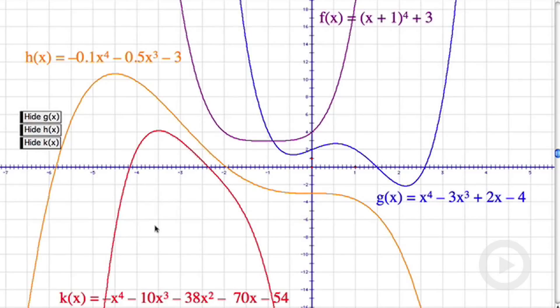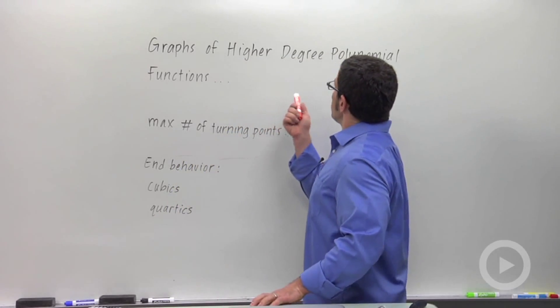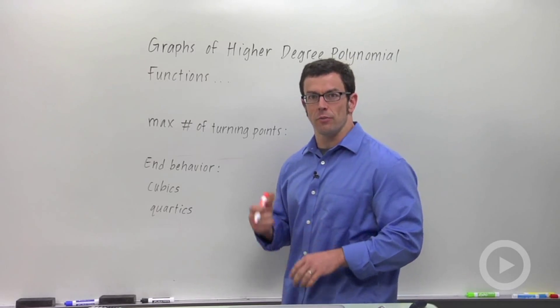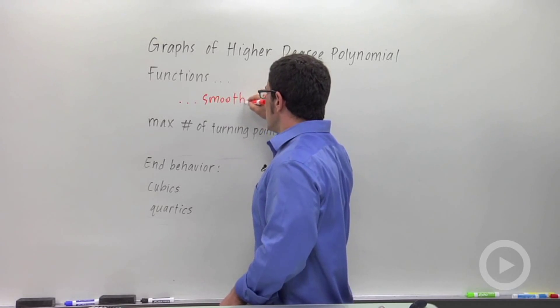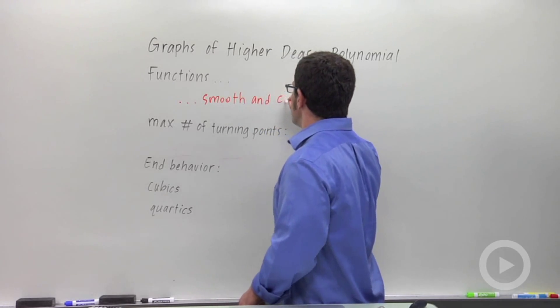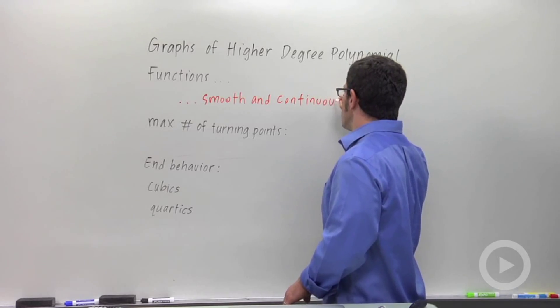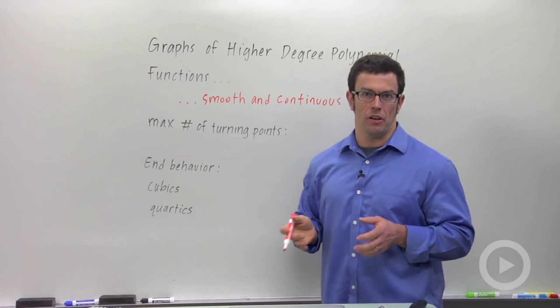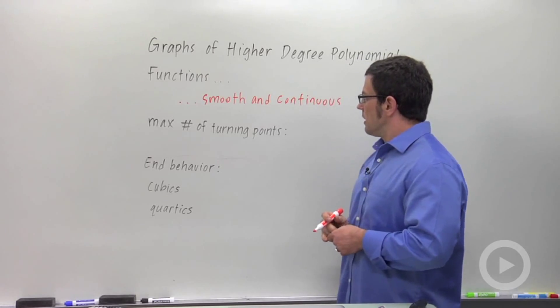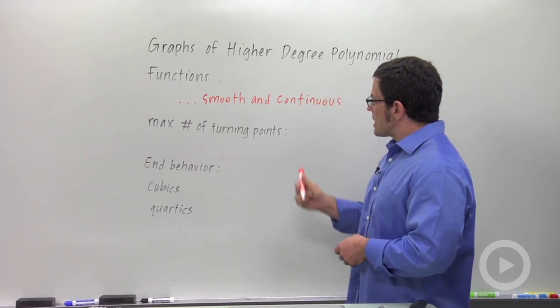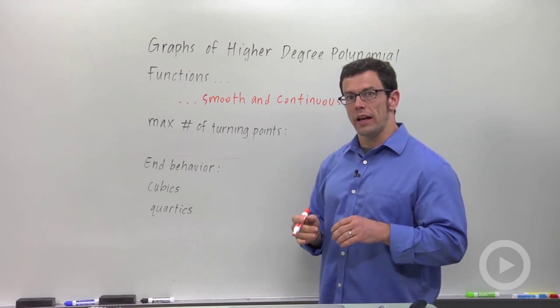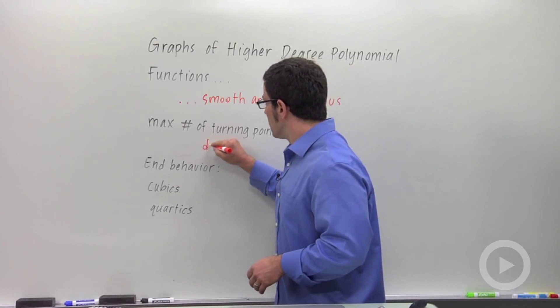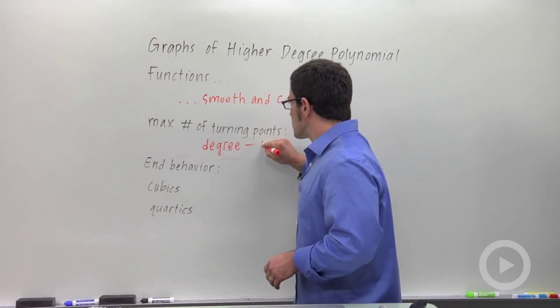So let's review what we've learned here about higher degree polynomial functions. The graphs of higher degree polynomial functions, first and foremost, the graphs are always smooth and continuous. Now that just means there aren't going to be any corners, and there aren't going to be any breaks in the graph as you draw them. They'll always have nice curves and be nice and smooth. Maximum number of turning points, remember that the cubic had at most two, and the quartic had at most three. So it's going to be the degree of the polynomial minus one.